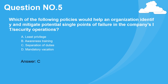Question number five. Which of the following policies would help an organization identify and mitigate potential single points of failure in the company's IT security operations? A. Least privilege. B. Awareness training. C. Separation of duties. D. Mandatory vacation. Answer: C.